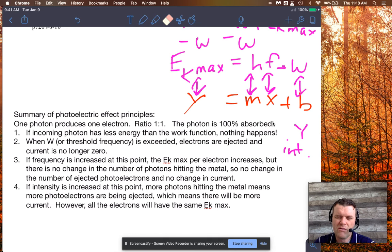So you increase the frequency, you increase the EK max. But you basically do nothing to the current flow, but number four says, if intensity is increased at this point, that means more photons are hitting the metal, which means more photoelectrons being ejected, which means there's going to be more current. But again, even with intensity, you'll have just more electrons will come out but they will have the same kinetic energy.